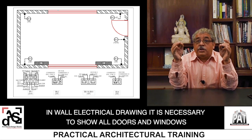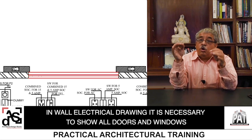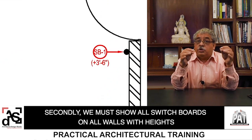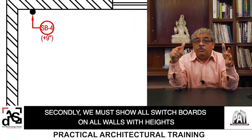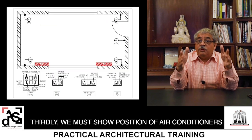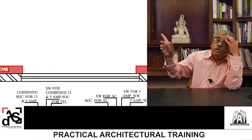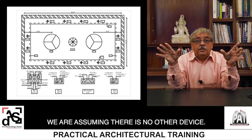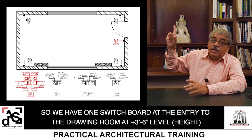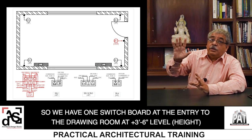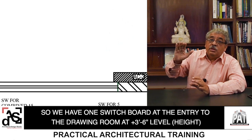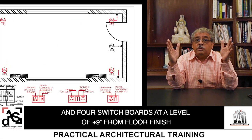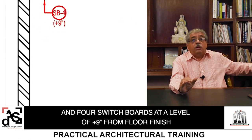Now let's look at the wall electrical drawing. In the wall electrical drawing it is necessary to show all the doors and windows. Secondly, we must show all switch boards on all walls with heights given. Thirdly, we must show the position of air conditioners. We have one switchboard at the entrance to the drawing room at plus three feet six inches level, and four switchboards at a level of plus nine inches from the floor.